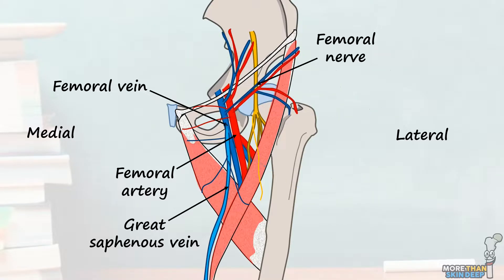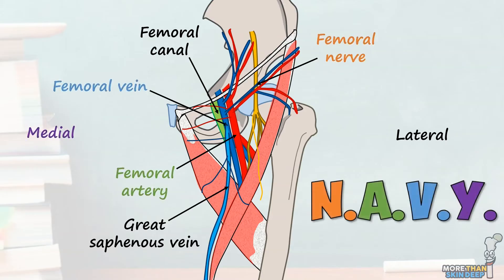The last structure to be aware of in the femoral triangle is the femoral canal, which is a potential space surrounded by connective tissue that contains lymph nodes and can be compressed during expansion of the femoral vein. It's worth being aware of because it's a common site for hernias to form in — we'll cover it more in a future video. An easy way to remember these structures and the order they go in is using the mnemonic NAVY, which stands for Nerve, Artery, Vein, and Y-fronts, aka underwear.